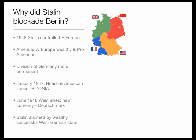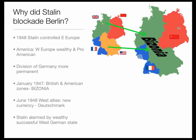In 1948, Stalin controlled Eastern Europe. The salami tactics had finished with Czechoslovakia. America, however, with Marshall Aid, was wanting to make Western Europe wealthy and pro-American. And it was looking like the division of Germany — that supposed temporary division into the Soviet zone, the British, the American, and the French zones — was starting to look more permanent. In January 1947, something that alarmed Stalin: the British and American zones merged into the imaginatively titled Bisonia, which further worried Stalin.